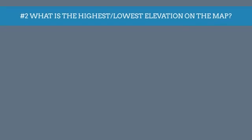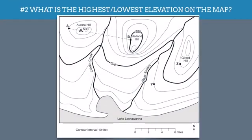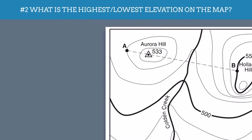Next, how do we find the highest and lowest elevation on a map? Well again, let's go back to that map we saw before. Now this map is helpful because it actually has a symbol shown here with a triangle and a dot that shows you the actual highest elevation, in this case 533 feet.